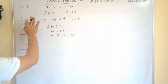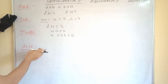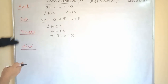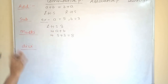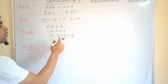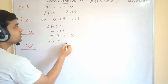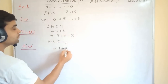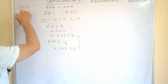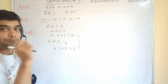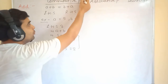Now we are going to check RHS. RHS is b + a, which means 3 + 5 = 8 again. Both are equal, which means addition is following the commutative property.